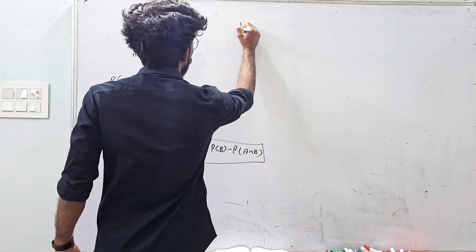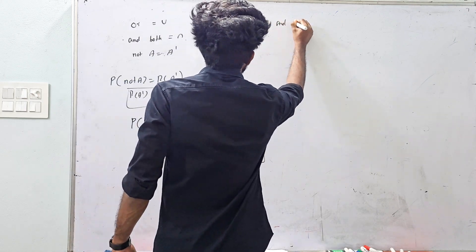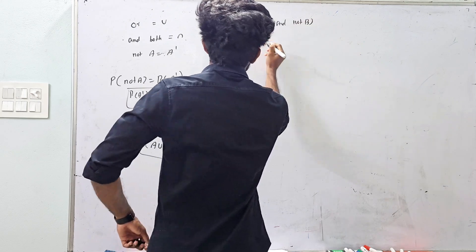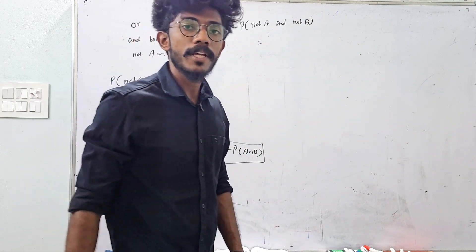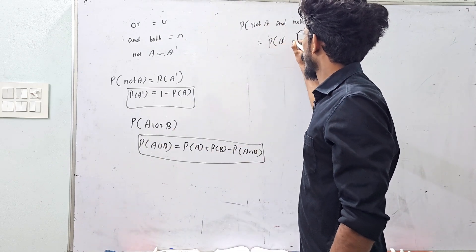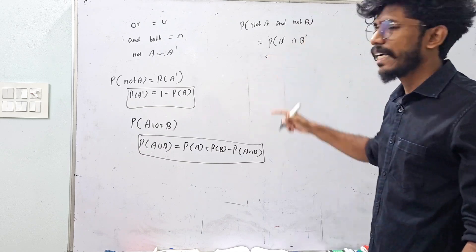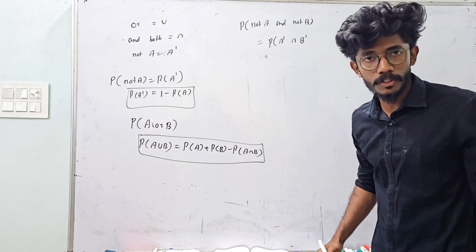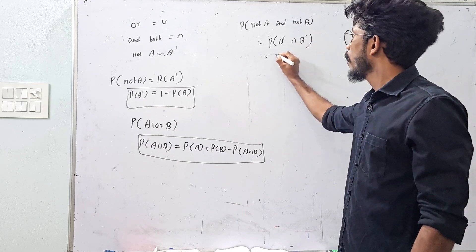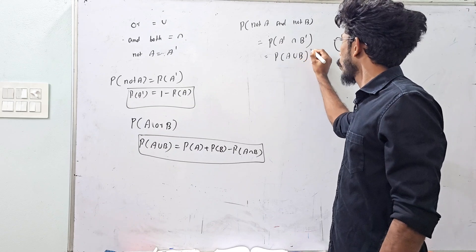The probability of A and B — the whole complement. This formula is very important. The set of De Morgan's is the main formula. The probability of A intersection B complement is nothing but the probability of A union B whole complement.